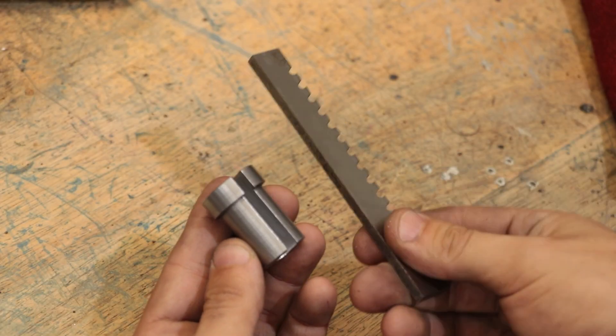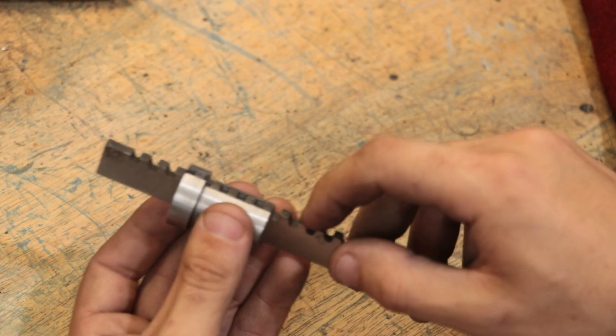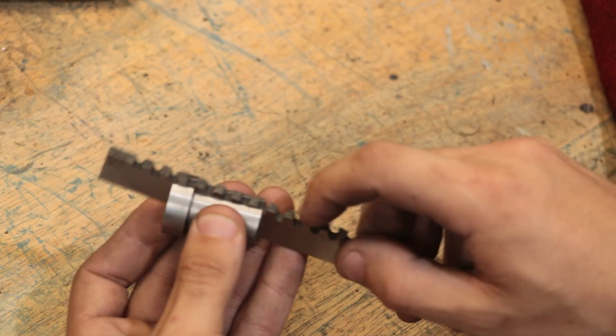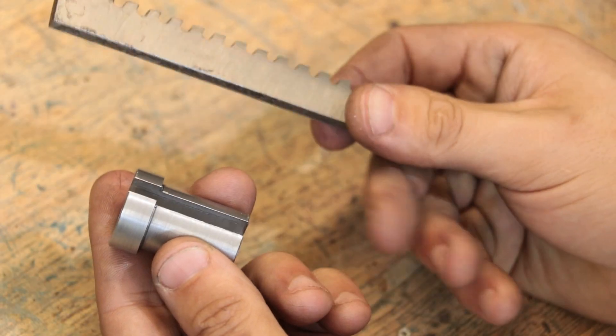And that's our broach and bushing done. And that's a pretty good fit between the two parts, which is really what you'd want. Nothing else left to do but see if it works.